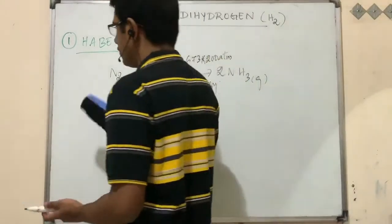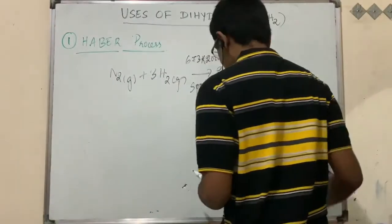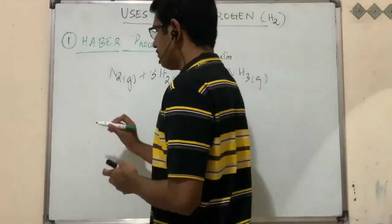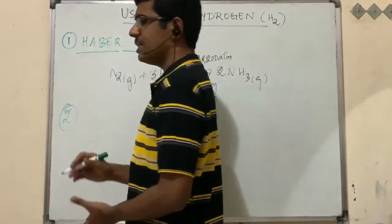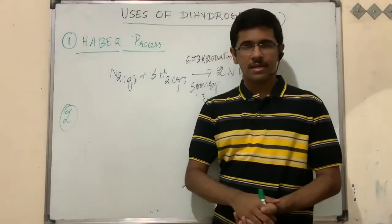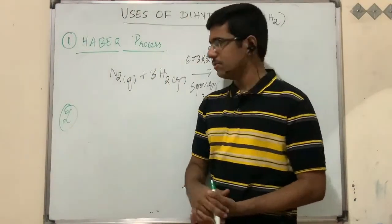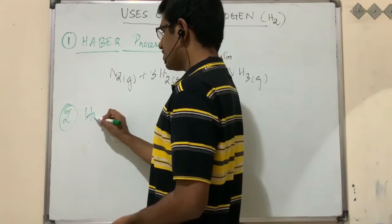The second use of dihydrogen is hydrogenation of vegetable oil to obtain vegetable ghee. Hydrogenation is one important industrial process.